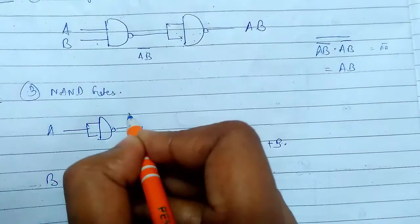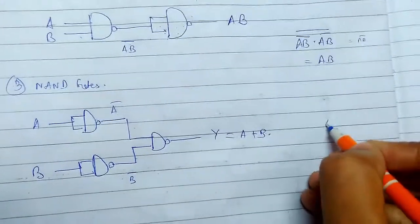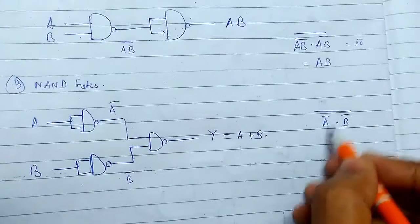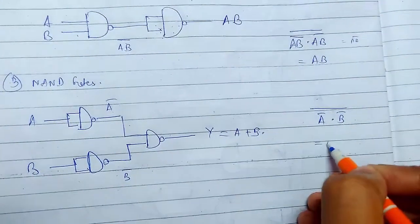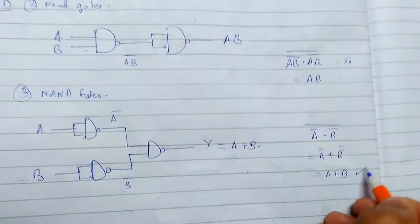So here from here we are getting A bar, here we are getting B bar, and we are just like A bar dot B bar whole bar. And if you break this from De Morgan's law, this will be this, and this is A plus B.